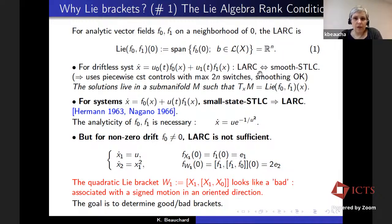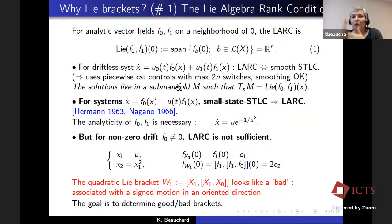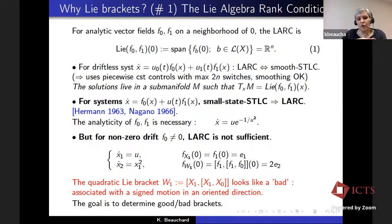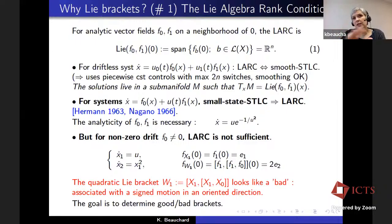For driftless control systems, the Lie algebra condition is a necessary and sufficient condition for smooth STLC. The solutions of the ODE live in a sub-manifold on which, at each point, the tangent space is the evaluation at point X of the Lie algebra spanned by F0 and F1. So if you want the solutions to fill the whole space, you need this tangent space to be R^N.